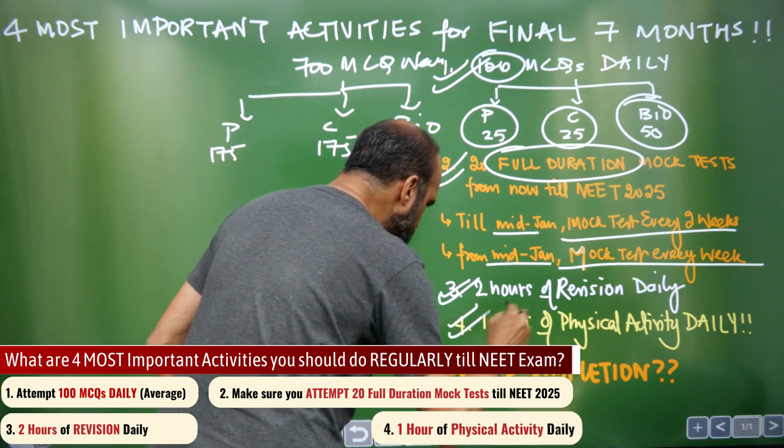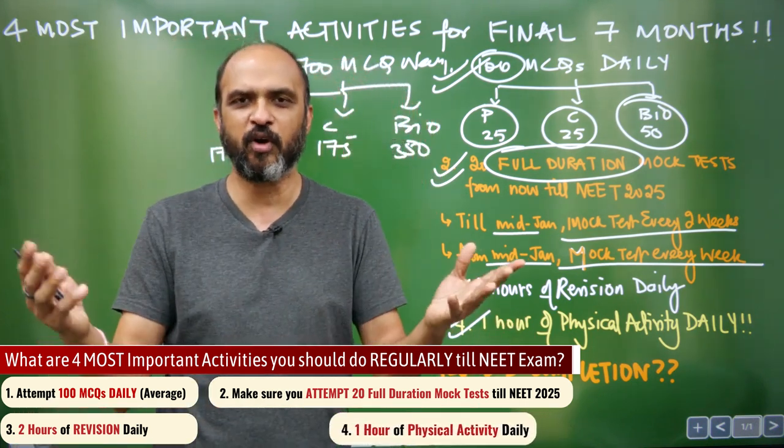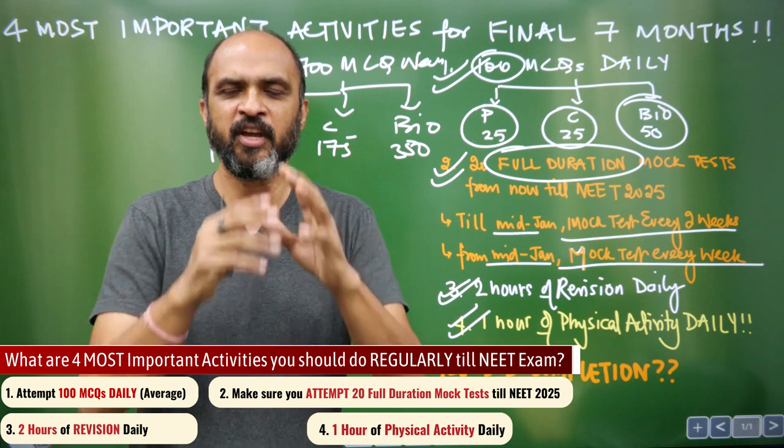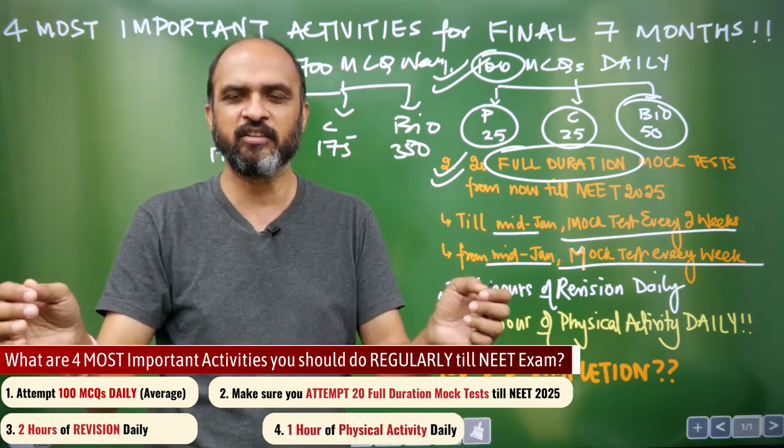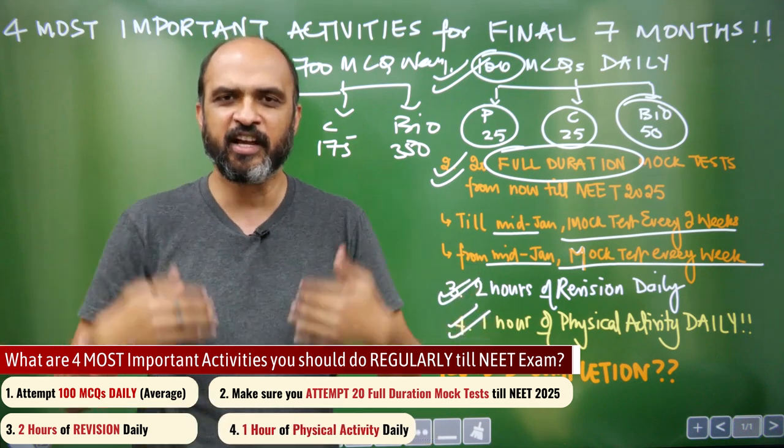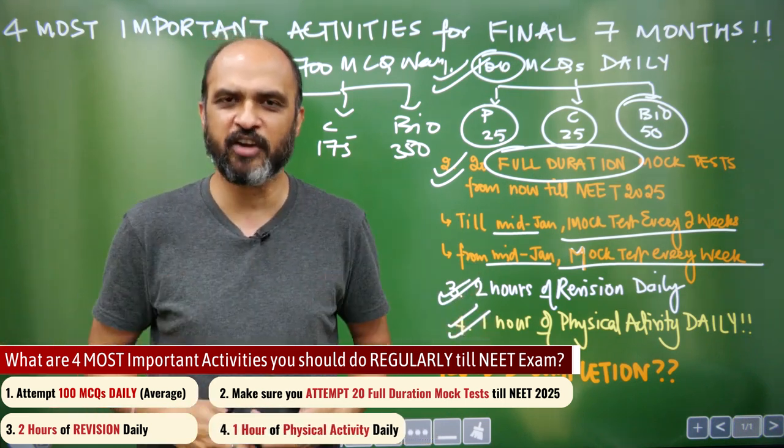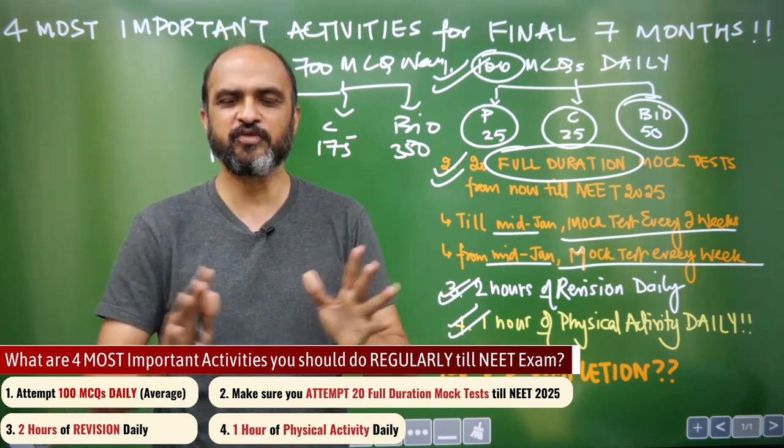Fourth thing, one hour of physical activity daily. Go for a brisk walk or do whatever you want. But don't spend all the time in a dark room in which only a lamp is there and you are studying on a table or you are lying on the bed and studying. That is not healthy. Take a shower every day. Change your clothes every day and go for one hour of walk daily. This will keep you healthy.